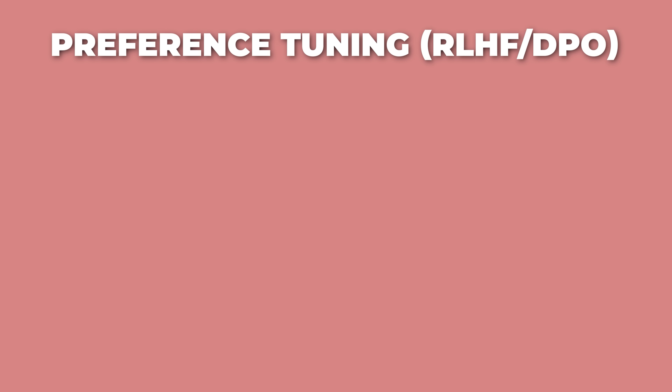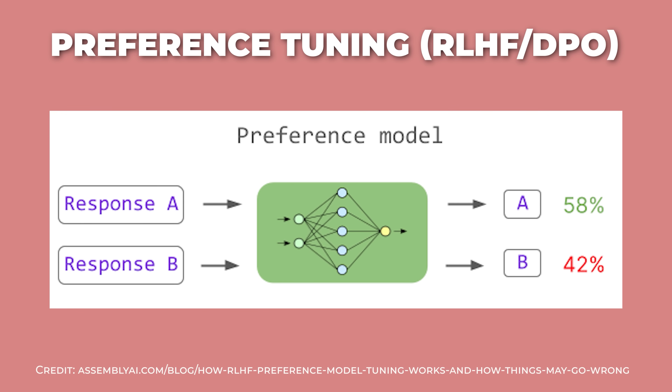Most consumer AI models go through one more step called preference fine-tuning. Humans rate different model responses, and the model learns to prefer answers that people like. This pushes it toward being more helpful, safe, and polite rather than just technically correct. It's the difference between a model that can write and one that writes in a way humans actually want to read, or the difference between a sycophantic model and one that is more down-to-earth.